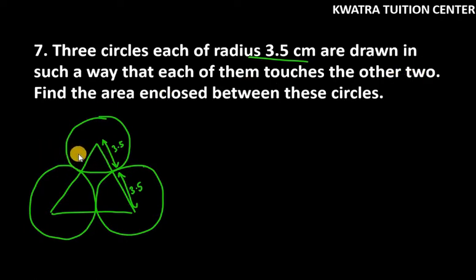You can see here, we have drawn 3 circles and they are touching each other. Find the area enclosed between these circles. You can clearly see that we have a common area between these 3 circles, and that is what we want to find.